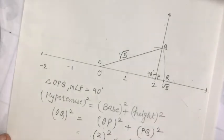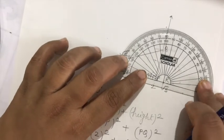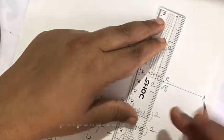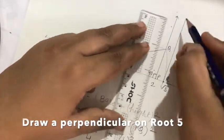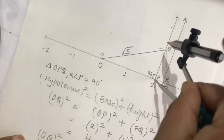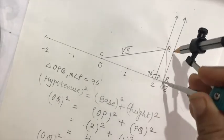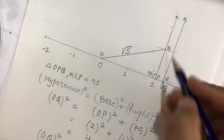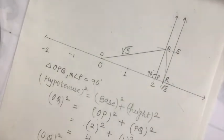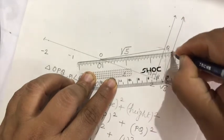Now in the same diagram I will show you how to construct root 7. So to construct root 7, draw a perpendicular at the point R, mark 90 degrees, draw the perpendicular — you need to repeat the same procedure. Take one unit distance — this is the one unit distance.